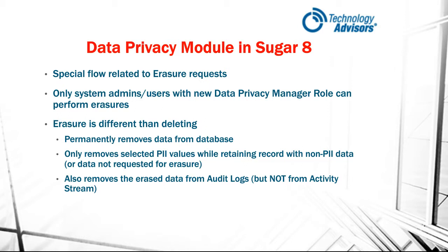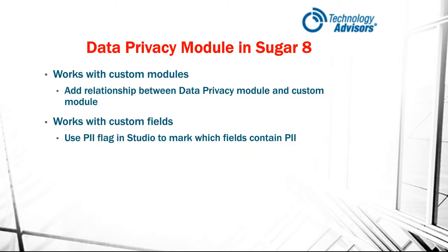The Data Privacy module in SUGAR does work with custom modules. If you have built any custom modules in SUGAR that contain personally identifiable information, all you need to do to use the Data Privacy module with those custom modules is add a relationship in Studio between the Data Privacy module and your custom module. It also works with custom fields — the PII flag now available in Studio is what you use to mark which fields contain PII, which is therefore the data available for erasing.